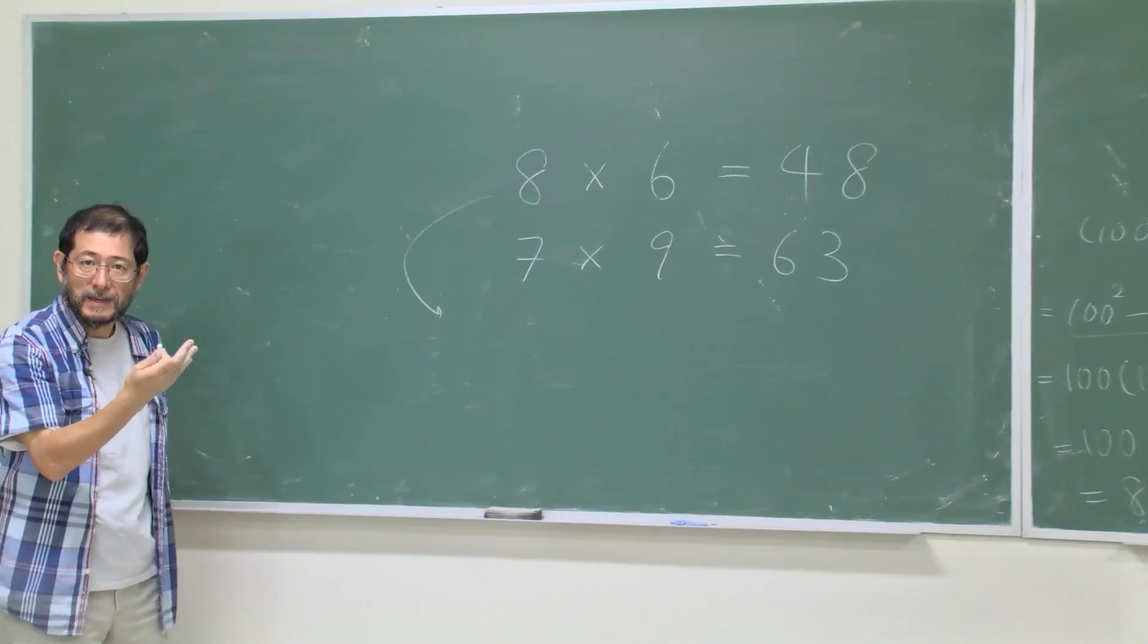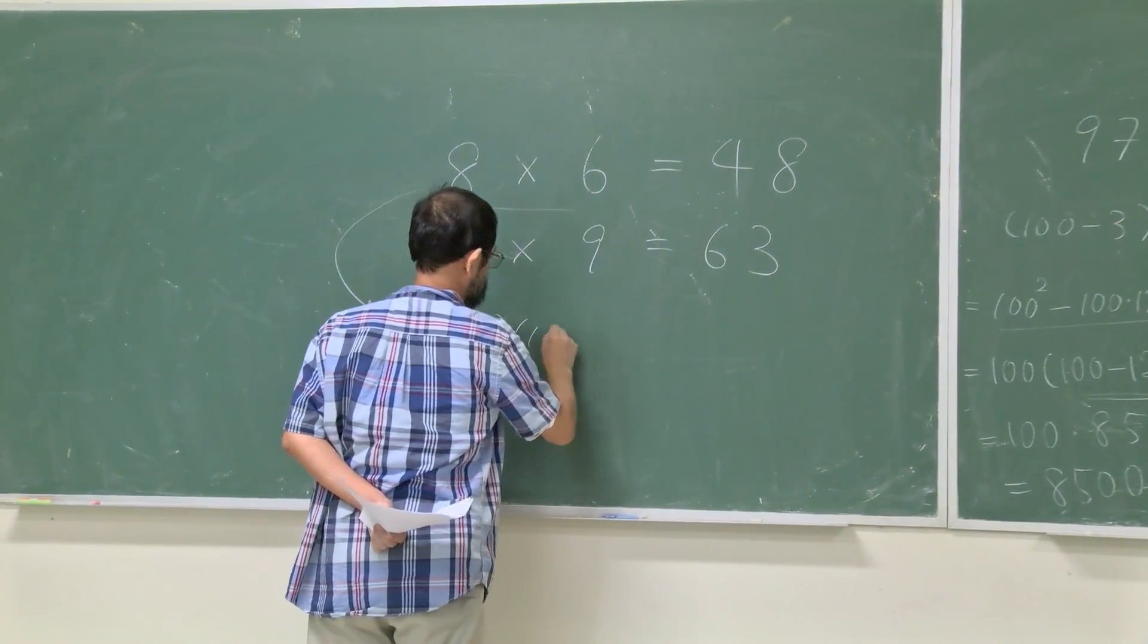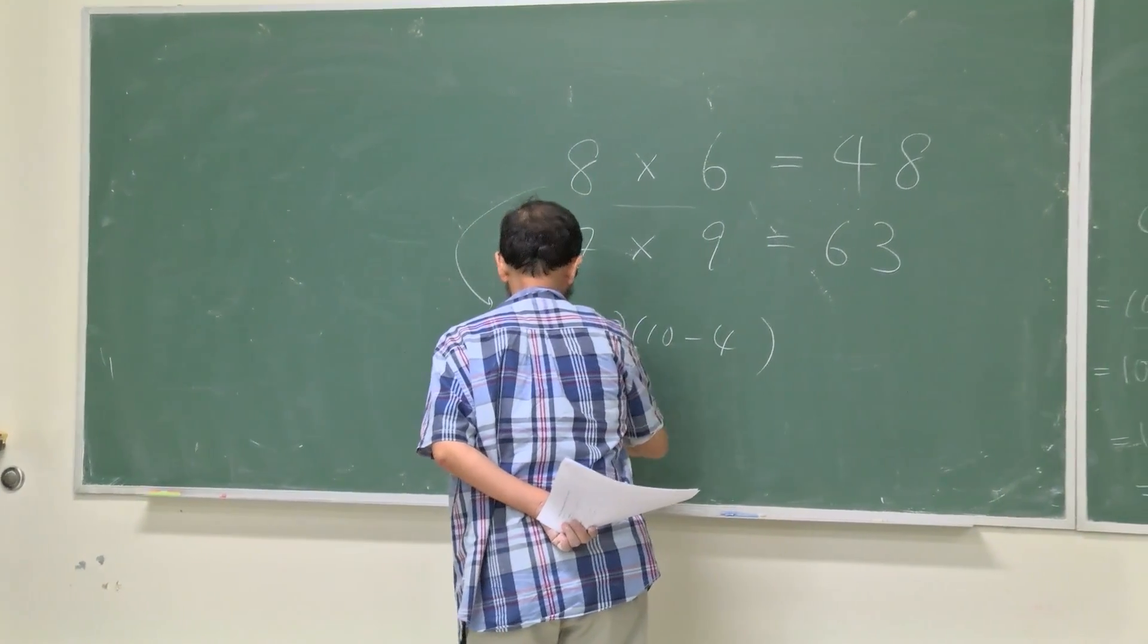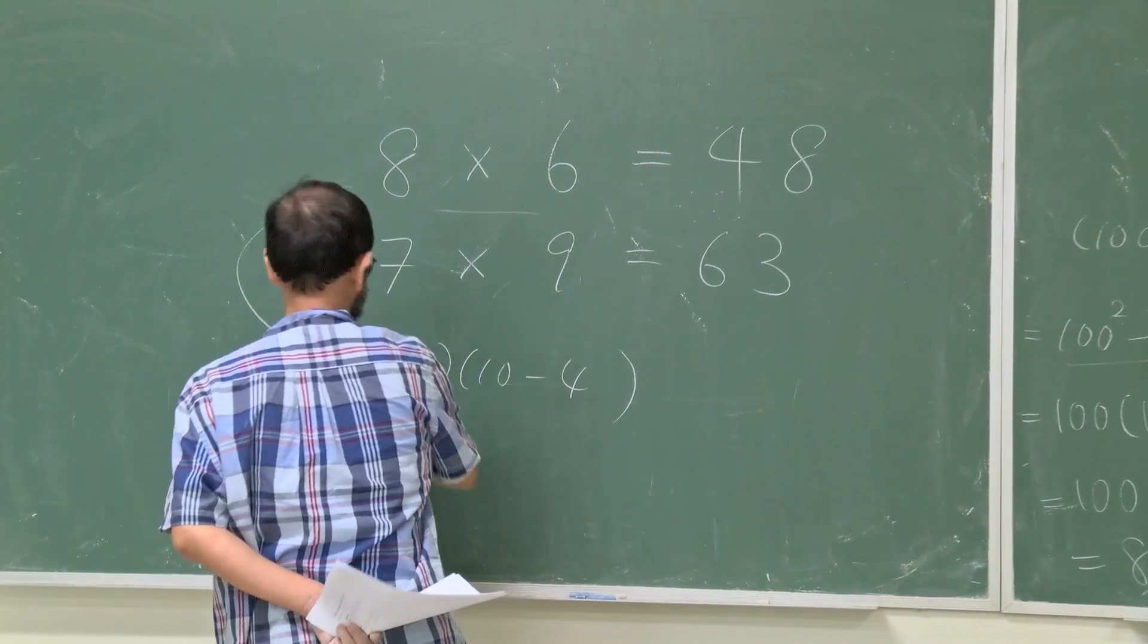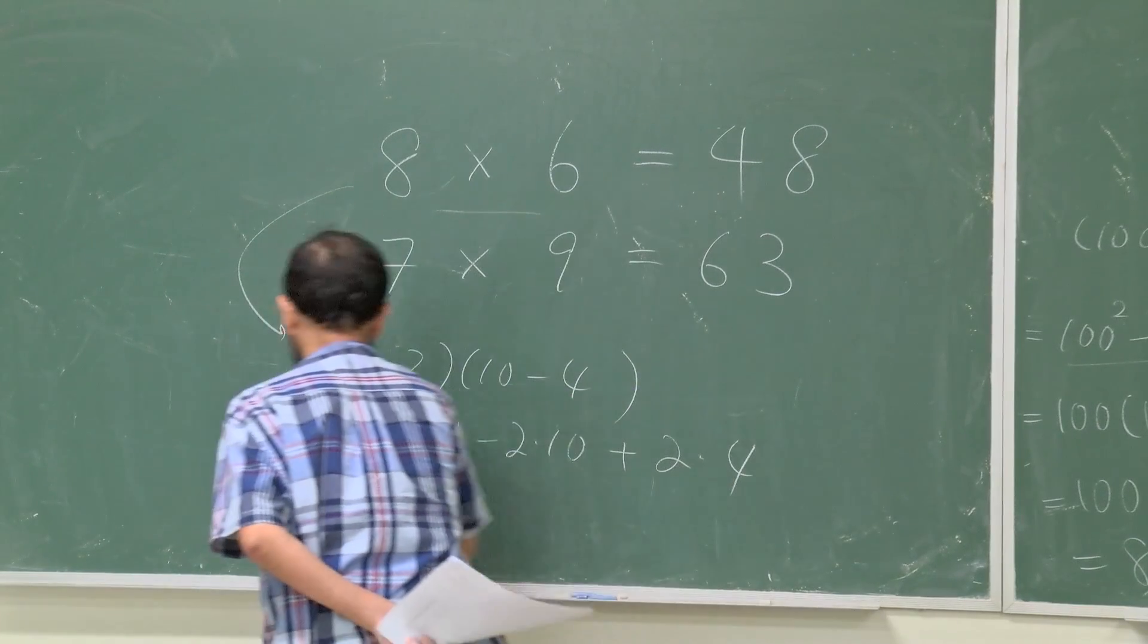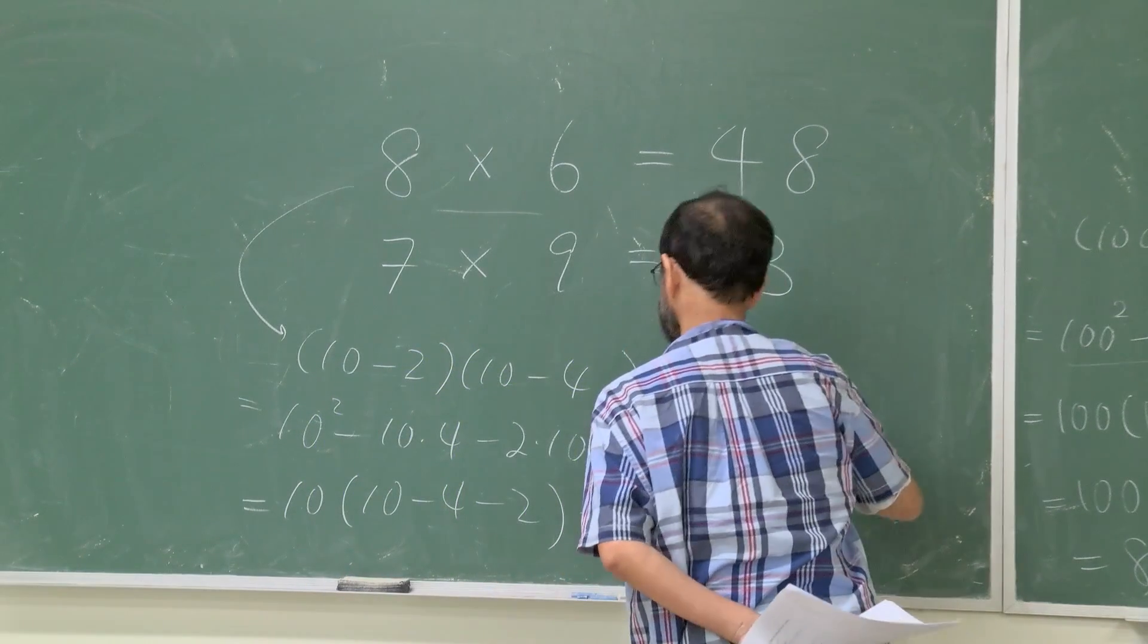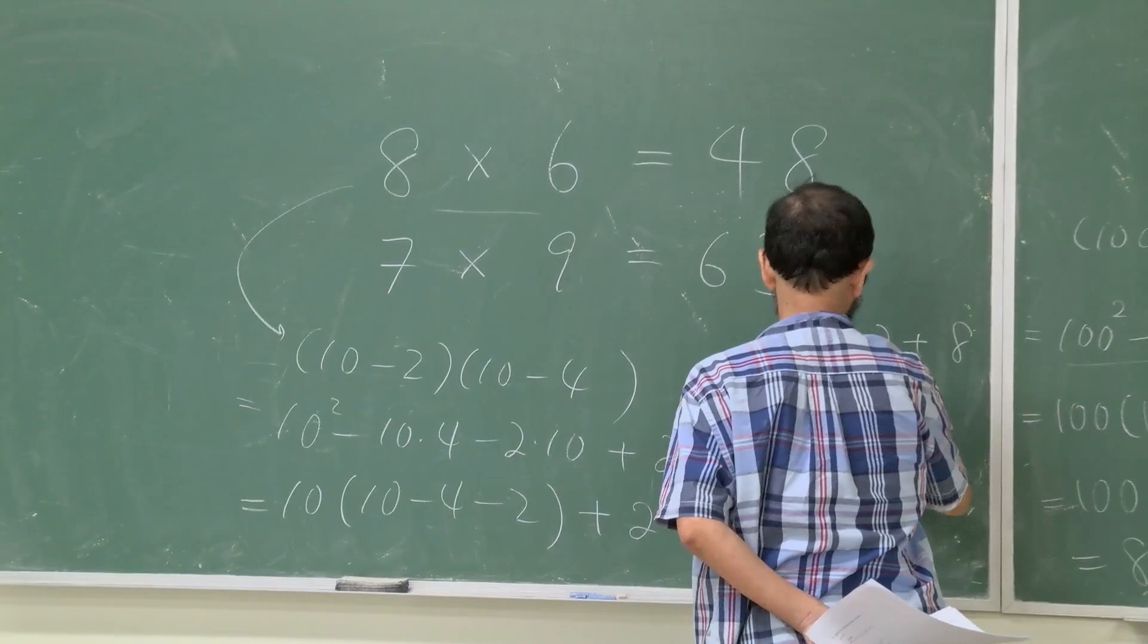You see that this is exactly the same idea. What I did is I'm viewing 8 and 6 this way here. And then I apply the FOIL. So 10 squared minus 10 times 4 minus 2 times 10 plus 2 times 4. Here, 10 times (10 minus 4 minus 2).